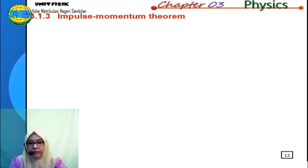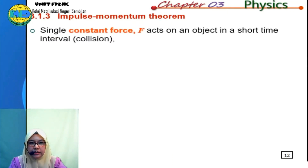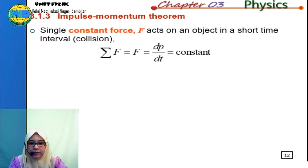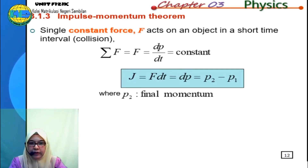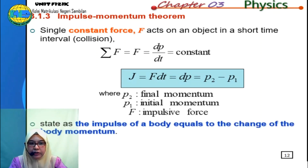Now let's continue with subtopic 3.1.3, the impulse-momentum theorem. Consider a single force F acting on an object over a short time interval. The total force on an object equals the rate of change of momentum when the value is constant. Therefore, impulse is given by J equal to F dt equal to delta p equal to P2 minus P1, where P2 is final momentum, P1 is initial momentum, and F is the impulsive force. The impulse-momentum theorem states that the impulse on a body equals the change in the body's momentum.